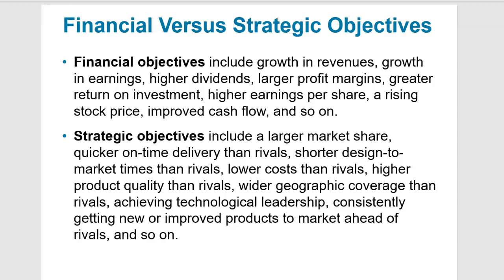Strategic objectives are things like improving your market share, better on-time delivery, shorter design-to-market timeframes, lowering costs relative to competitors, higher product quality compared to competitors, bigger geographic coverage compared to rivals, achievements in development technologies and technological leadership, and getting new and improved products to market ahead of rivals. Strategic objectives are more about designing, improving, implementing, and distributing products — it's more about what the company has to offer and getting that to customers. Offering better products and getting them to more customers defines strategic objectives. The two — financial and strategic — are related: you're not going to achieve your financial objectives unless you're achieving your strategic objectives.